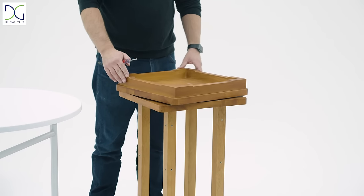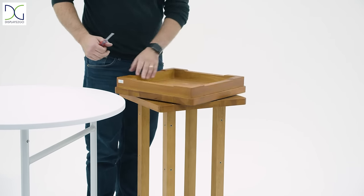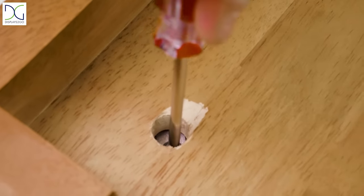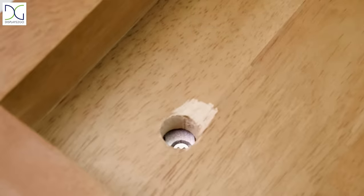Rotate the wooden base and align the remaining holes on the rotating plate with the corresponding screw holes. Insert one long M4 screw at a time and screw it into the hole without tightening.